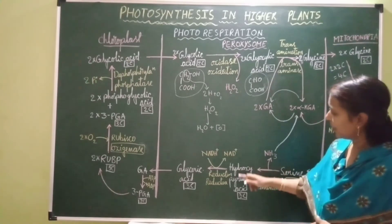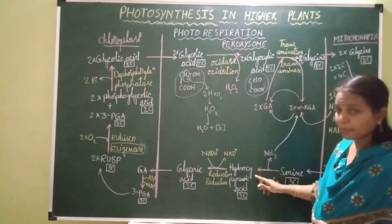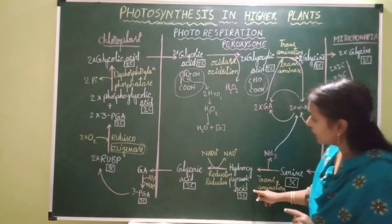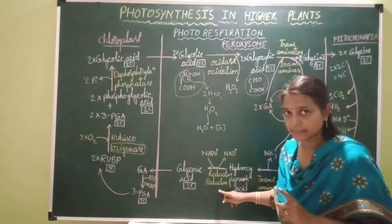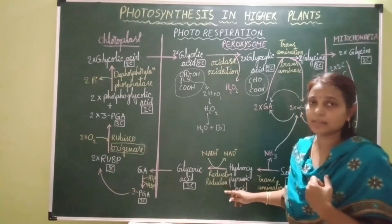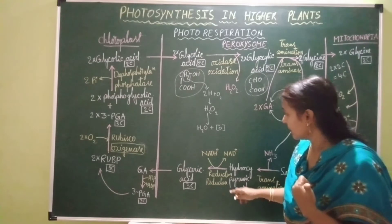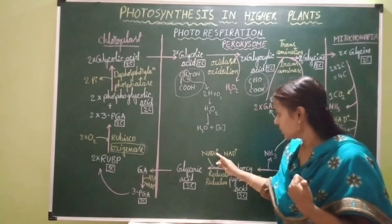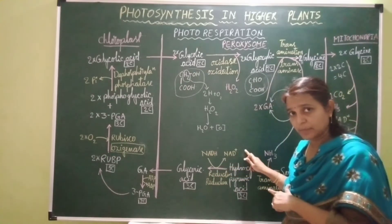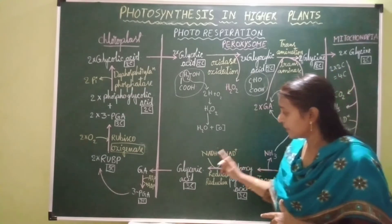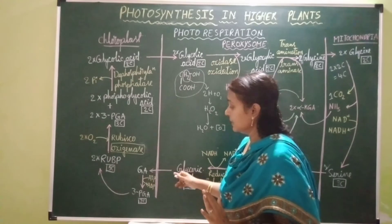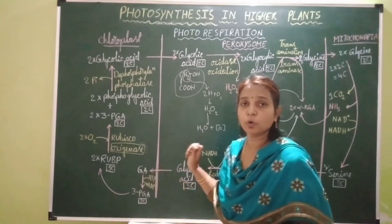After deamination of serine, hydroxypyruvic acid is formed — a three-carbon acid. This hydroxypyruvic acid undergoes reduction by the enzyme reductase. It requires protons and electrons, which are donated by NADH. NADH is oxidized into NAD⁺, and hydroxypyruvic acid is reduced into glyceric acid — a three-carbon compound. This glyceric acid leaves the peroxisome and enters the chloroplast.